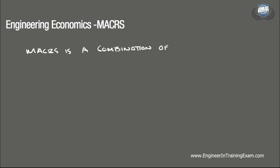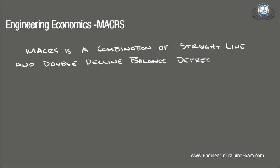Modified Accelerated Cost Recovery System Depreciation is a combination of the straight line and double declining depreciation methods. This method can be a little bit more involved, having various tables in the real world to determine the recovery periods or equipment life allowed for several different classes of equipment.